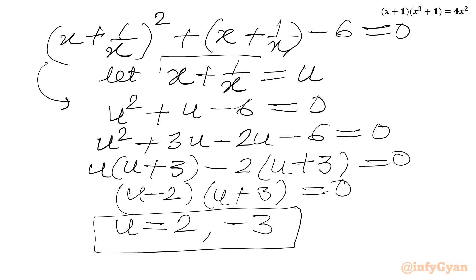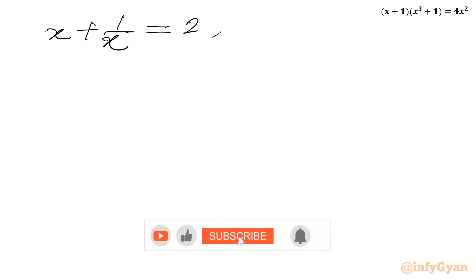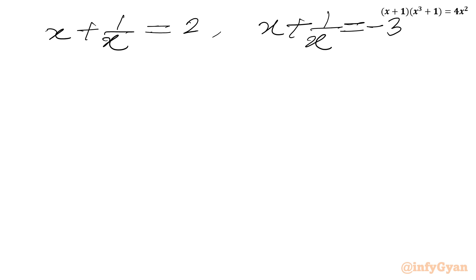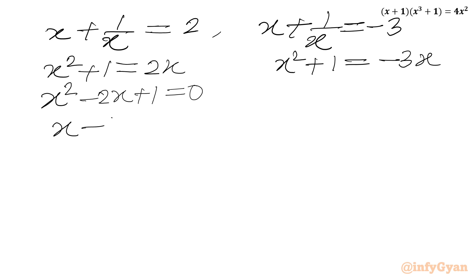Now u was x + 1/x. So I can write x + 1/x = 2, or x + 1/x = -3. Multiplying both sides by x: x² + 1 = 2x, which gives x² - 2x + 1 = 0, or (x - 1)² = 0. So x = 1 with multiplicity 2.